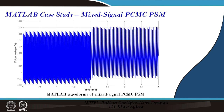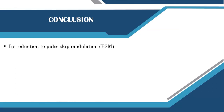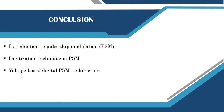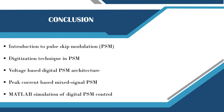In summary, we have discussed the pulse skipping operation, the digitization method, voltage-based digital pulse skipping control, peak current-based mixed signal pulse skipping, and multiple simulation case studies. In the subsequent lecture on hardware implementation, we want to implement some of this logic in the digital control platform using FPGA and show practical demonstration case studies. That is it for today. Thank you very much.